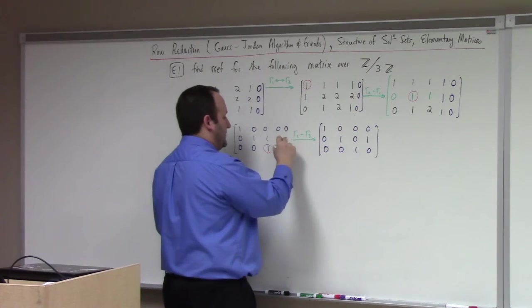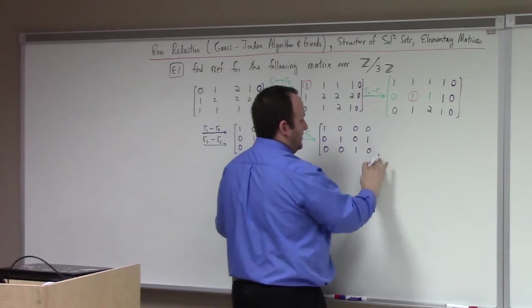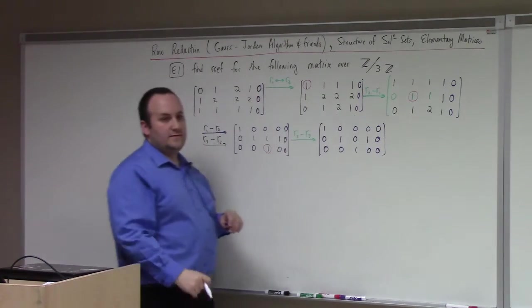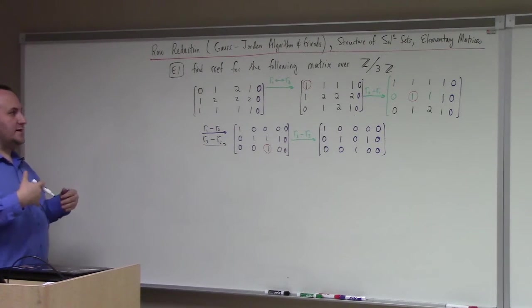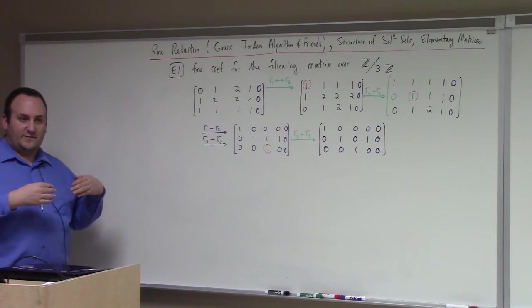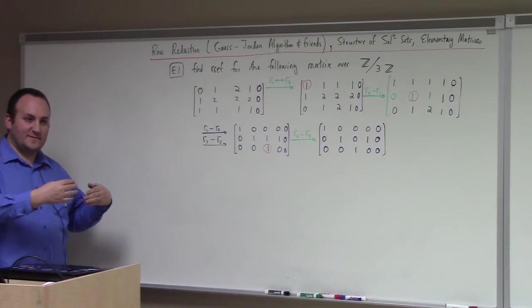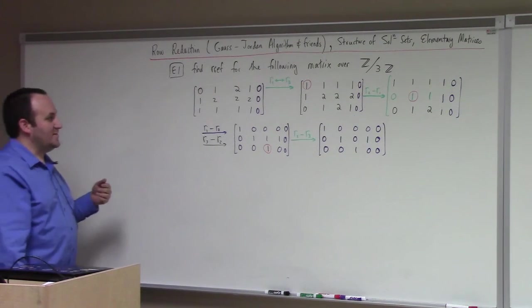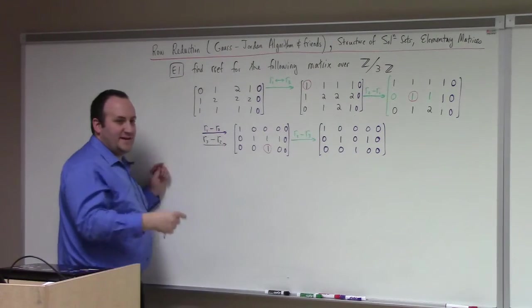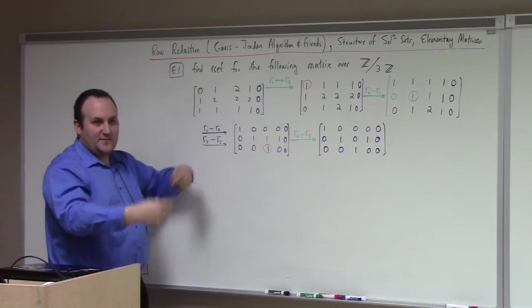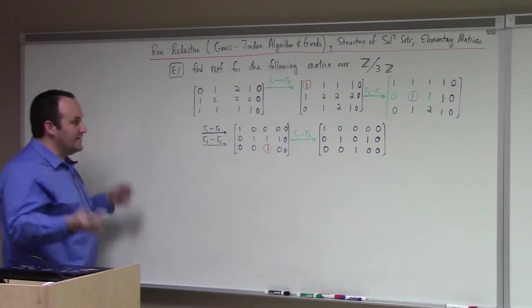I will say some summative things about the reduced row echelon form here in just a second. My point is I can add a column of zeros. One of the things about Gauss-Jordan elimination is it goes column by column — whatever's in the jth column stays in the jth column. So the last column, you do row operations on it — it's just moving zeros around. Zero, zero, zero, zero.